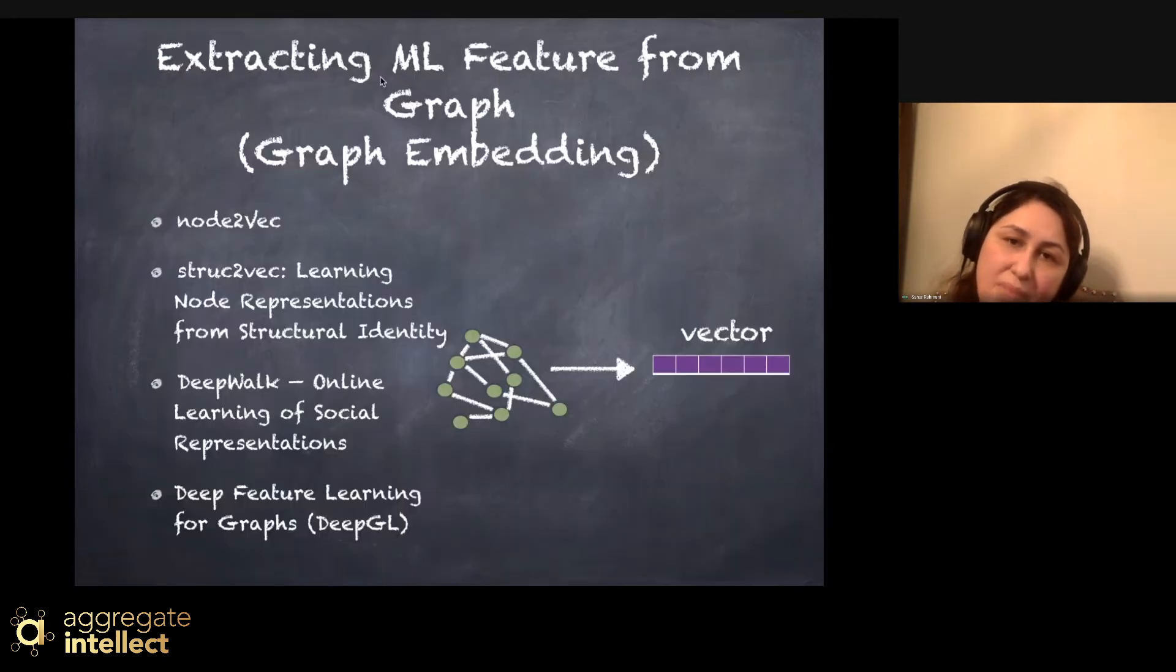As I mentioned, extracting machine learning features from graph is one of the features that you can use graph in your machine learning model. So graph embedding is very similar, it's the same as word embedding algorithm. Practically we want to determine a vector representation for each entity, usually for nodes in our graph as a vector.